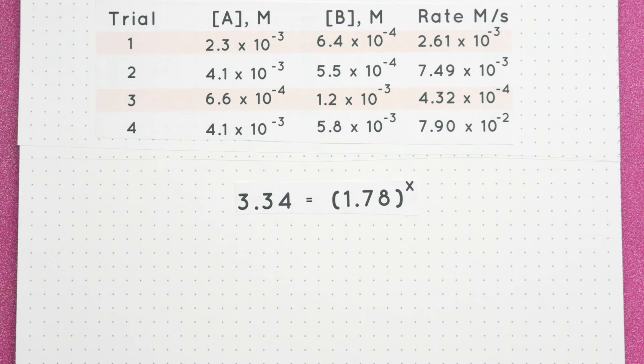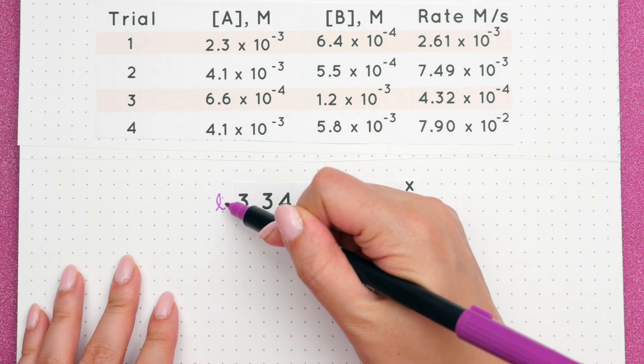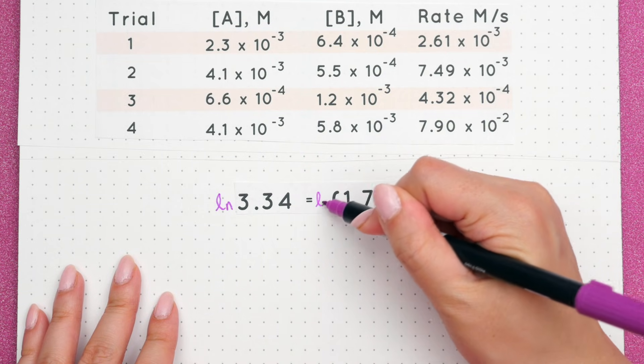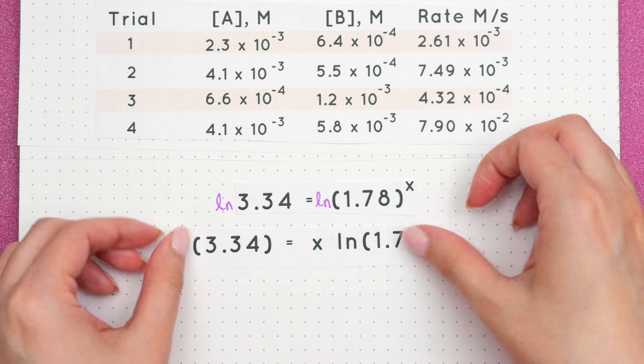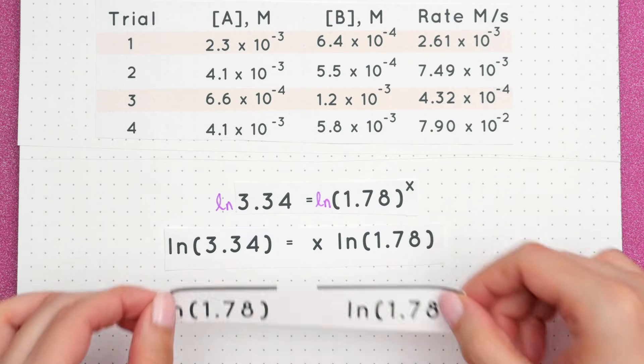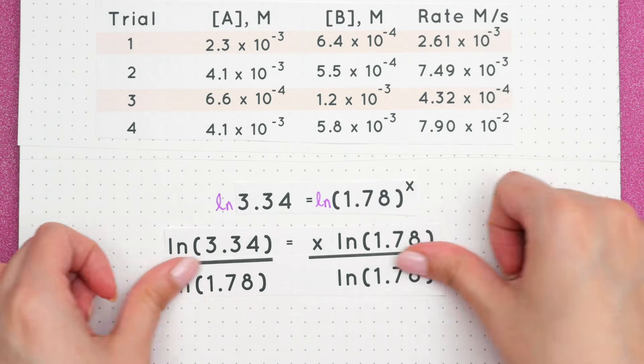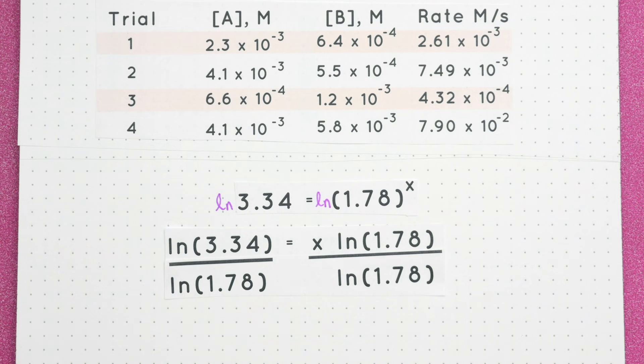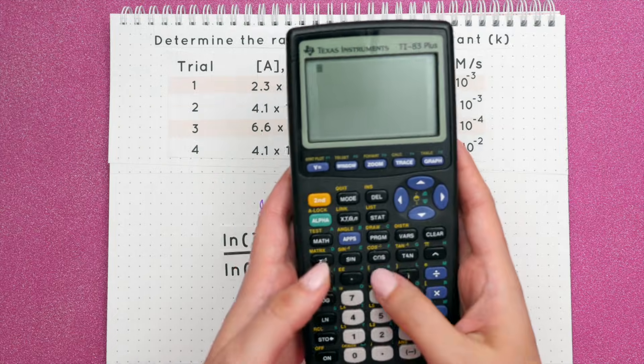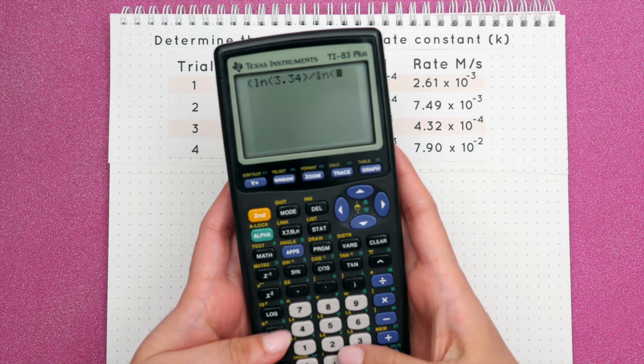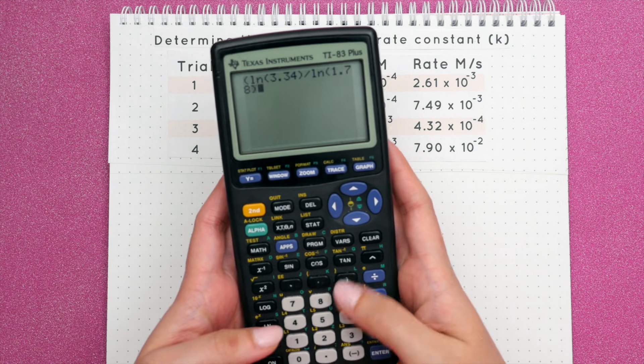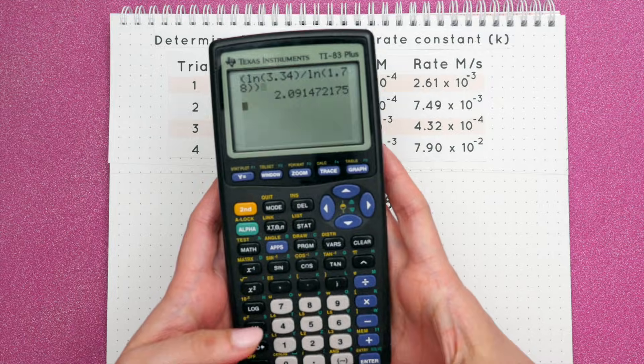To solve for x, we will take the natural log or ln of both sides. When we take the ln of the right side, the exponent of x comes down in front. Divide both sides by the ln of 1.78. Plugging in the ln of 3.34 into our calculator and the ln of 1.78, divide these values and x is equal to 2.